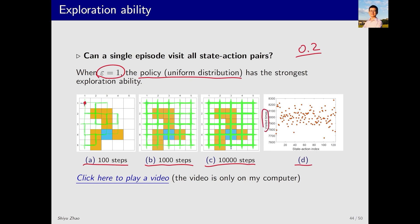Now, let's examine how many times each state action pair is visited if the episode has one million steps. The x-axis represents the index of state action pairs, which totals 125 - 25 states with 5 actions each. Each state action pair has been visited thousands of times.